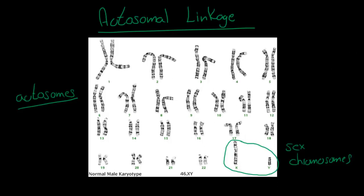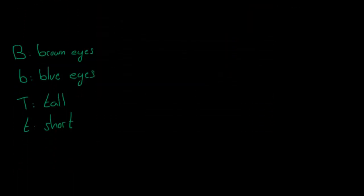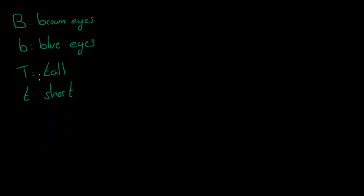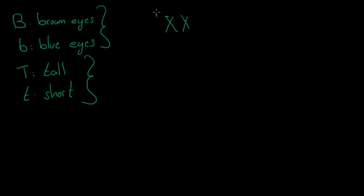Let's do an example of a dihybrid cross to remind you how this works. If we are looking at two traits — the color of the eyes and whether someone is going to be tall or short — these two characteristics are found on different chromosomes. For example, one chromosome pair has the B alleles, and on a different pair of chromosomes you find the alleles that control height. So these two characteristics are not on the same chromosome pair.